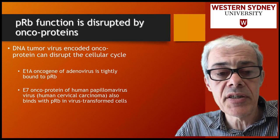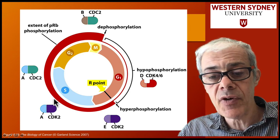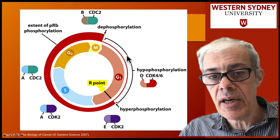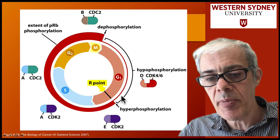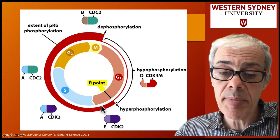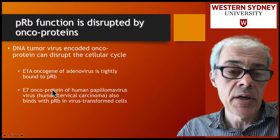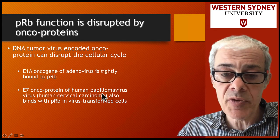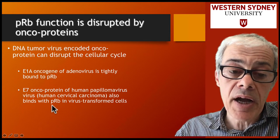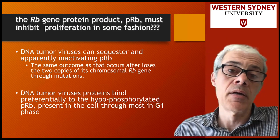Oncoproteins can make retinoblastoma behave as if it's phosphorylated. Phosphorylated retinoblastoma is inactive — it doesn't act as a brake. It only acts as a brake when unphosphorylated. Once you phosphorylate retinoblastoma, it turns off the brake. Some tumour viruses can bind retinoblastoma and effectively turn it off regardless of its phosphorylation state. For example, the E7 oncoprotein from human papillomavirus, which is important in cervical cancer, can bind to retinoblastoma and inactivate the protein.